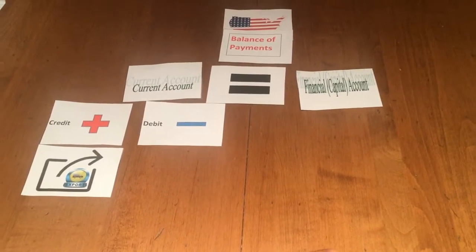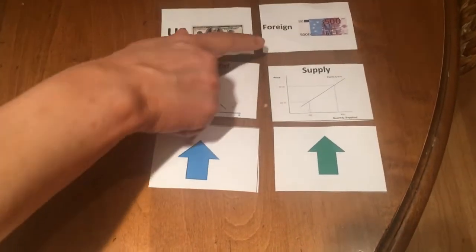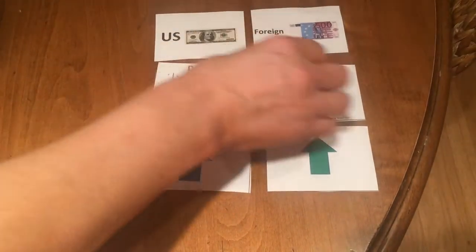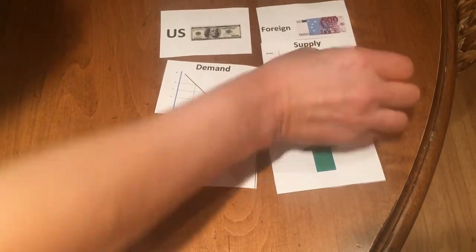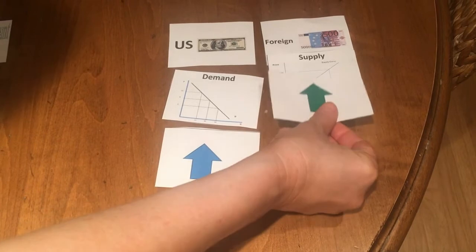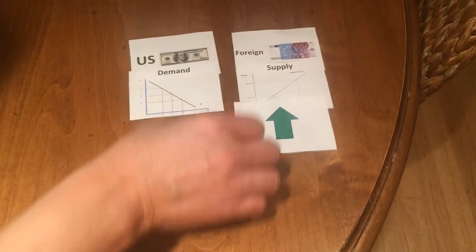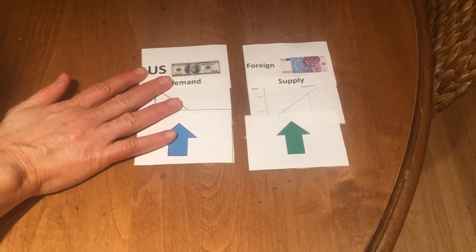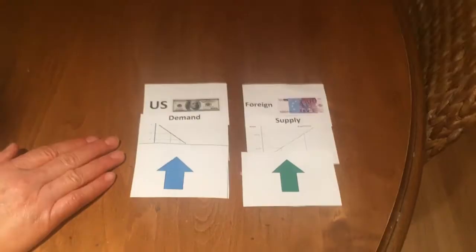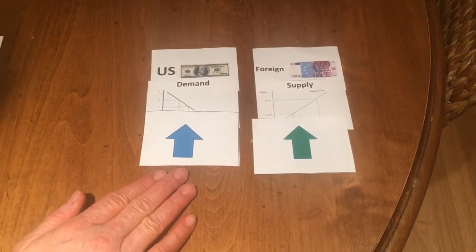When we think about what that means for the currency, we need to think about the money. In order for a foreign country to buy our products, they have to supply their currency because they have to buy them with US dollars, and so the demand for US dollars goes up. The key is that an increase in supply for one country is an increase in demand for the other.